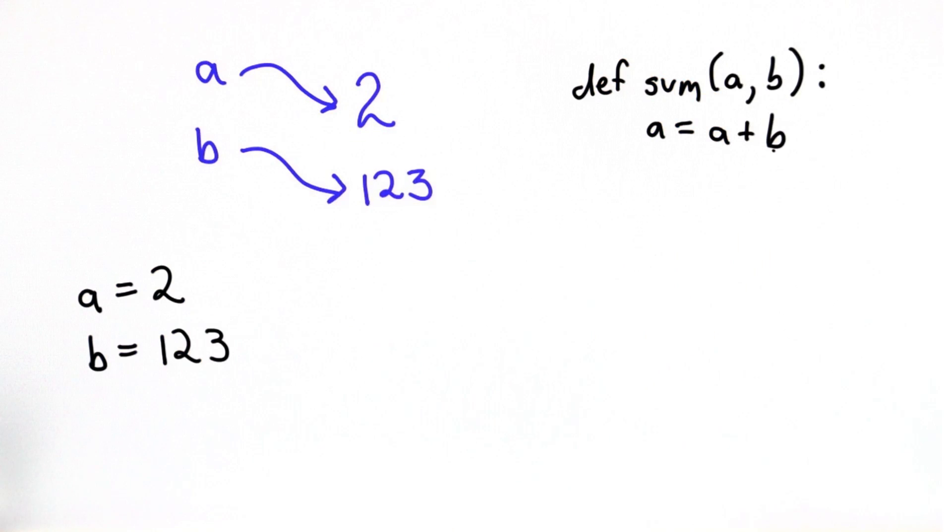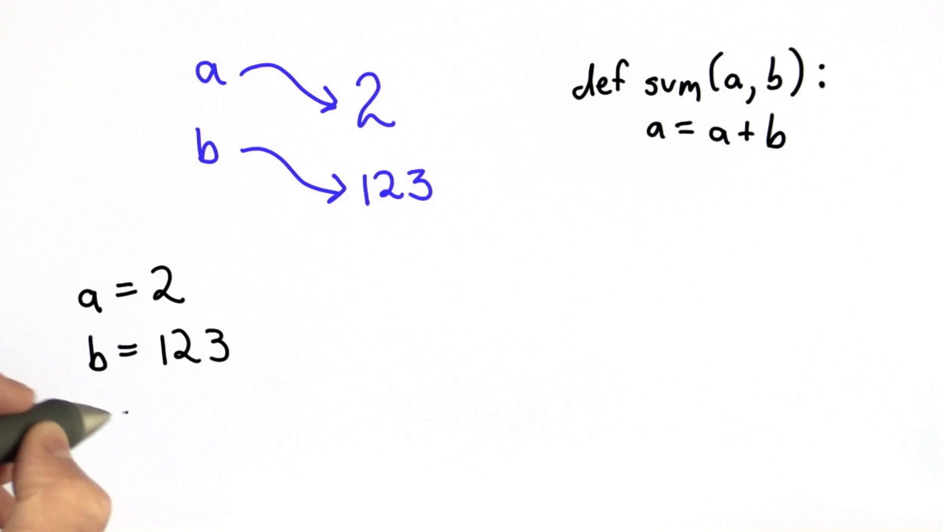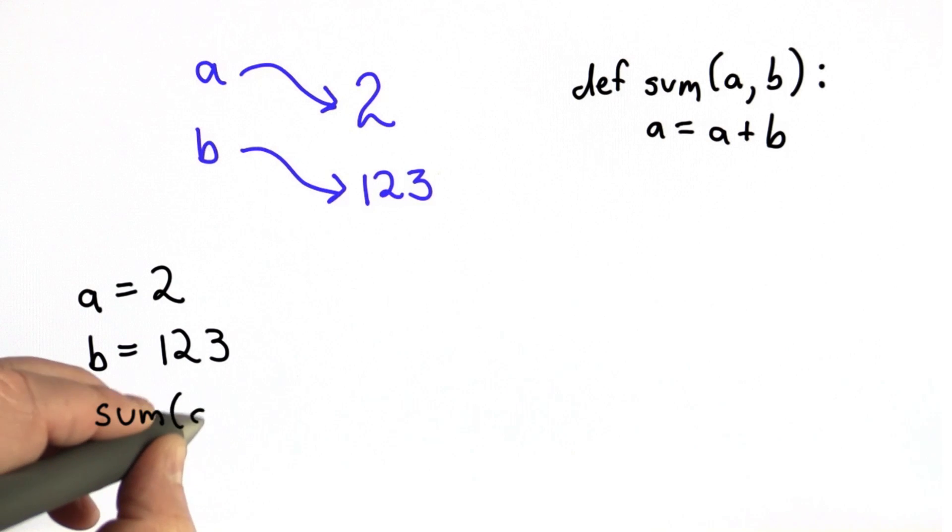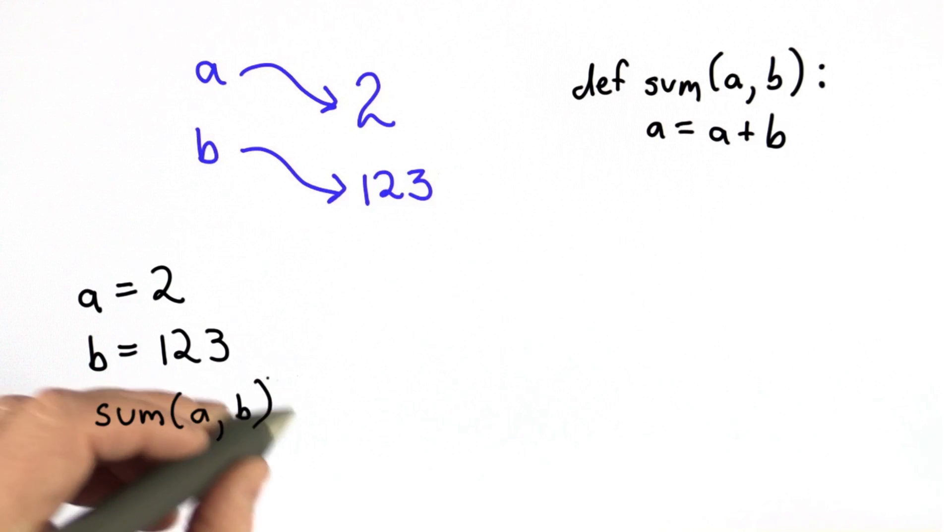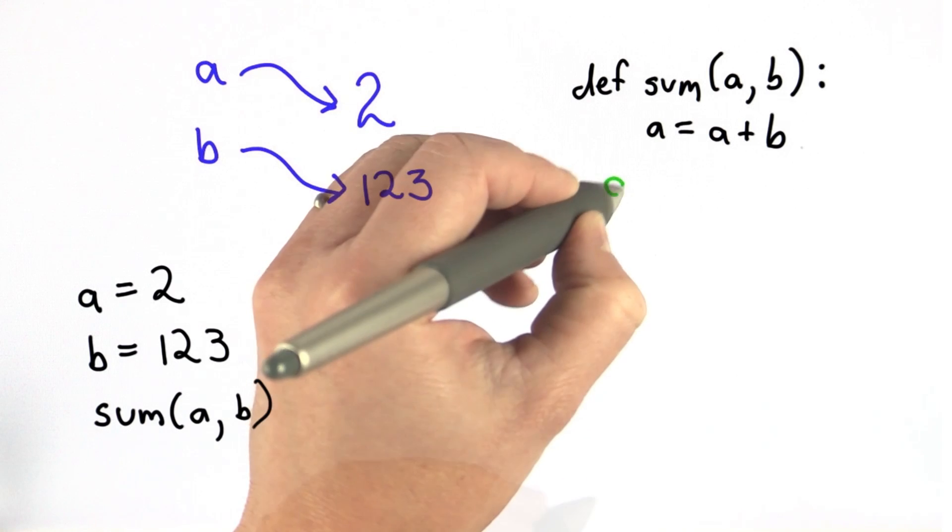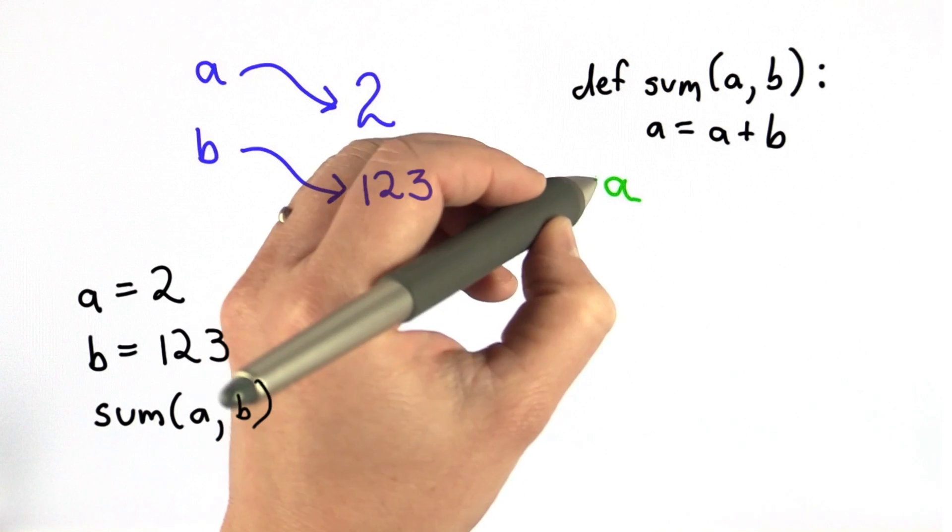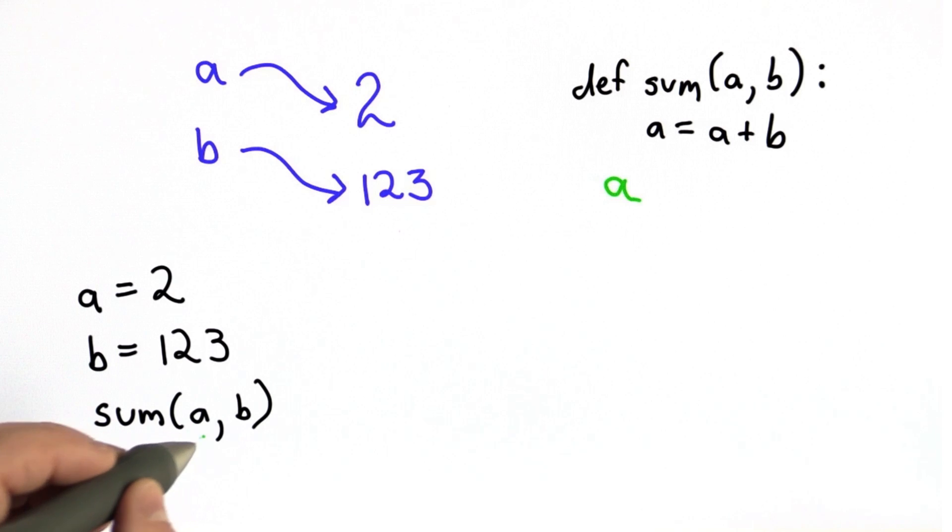And we have our procedure that we define like this. It takes the two inputs. It changes the value of the input named a. And we're going to call sum passing in a and b. So what happens when we call sum? We have these names here. The names are our parameters. We're going to have a name inside sum that's a. That a is going to refer to whatever value is passed in here.